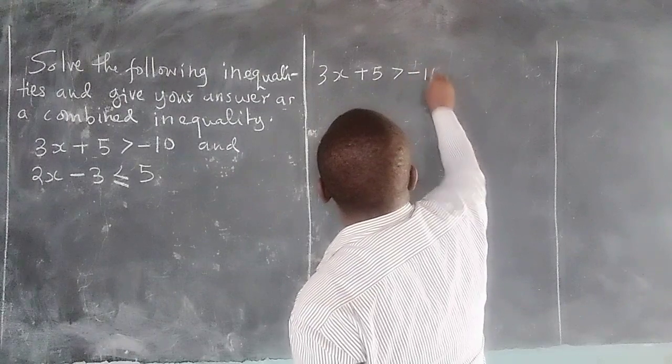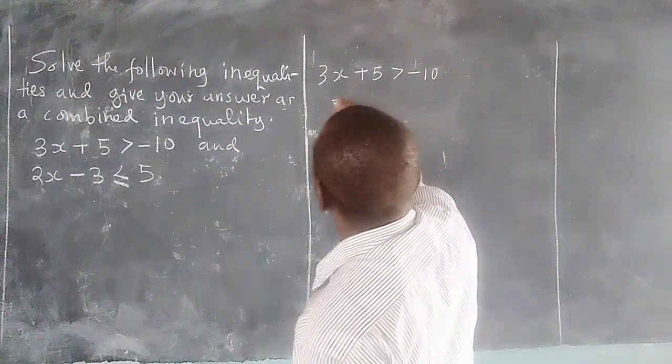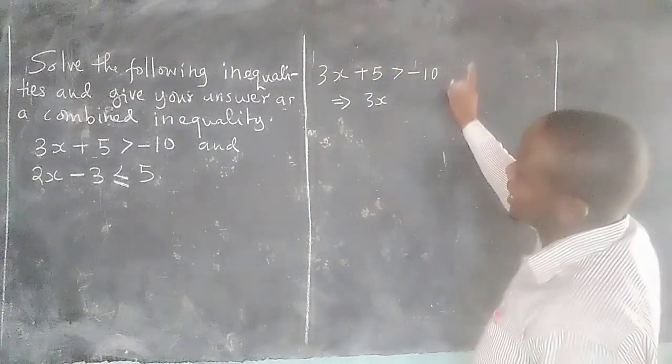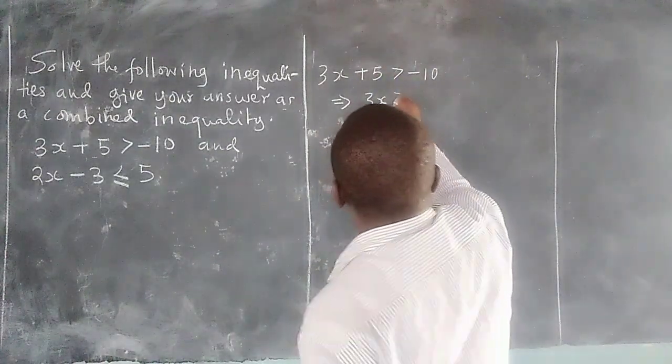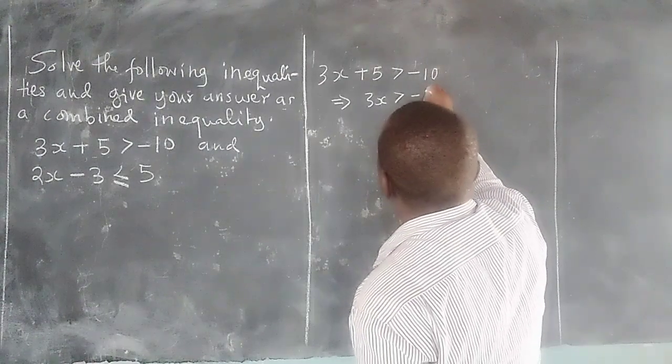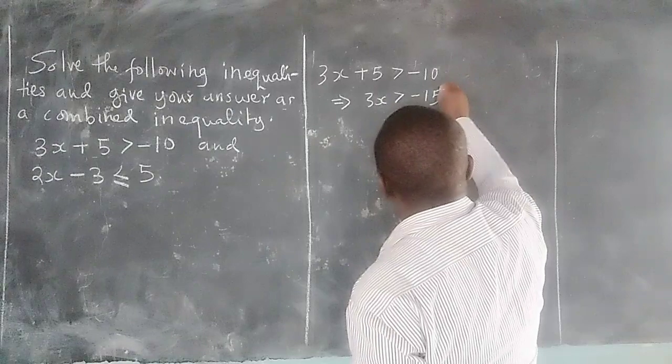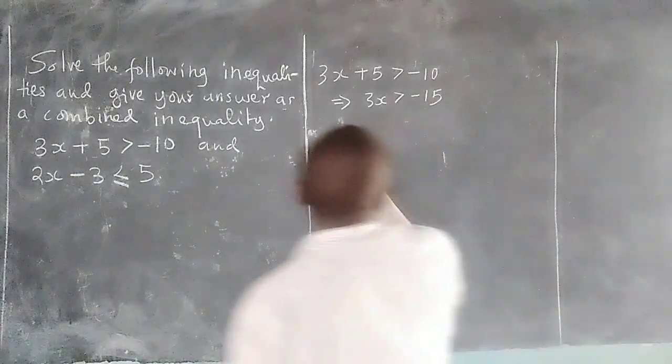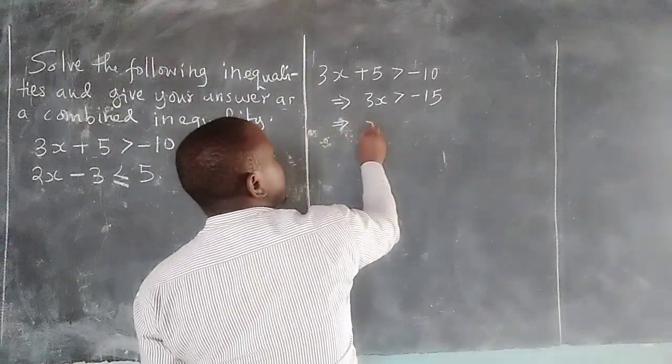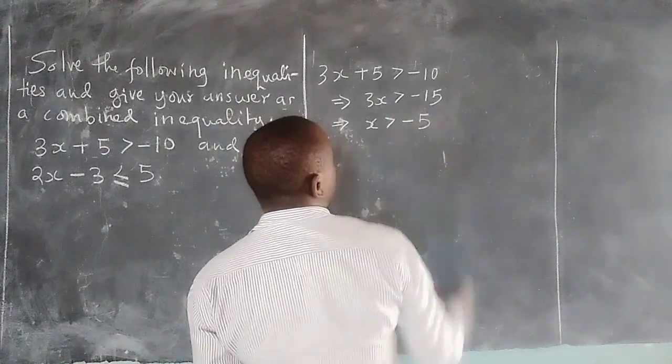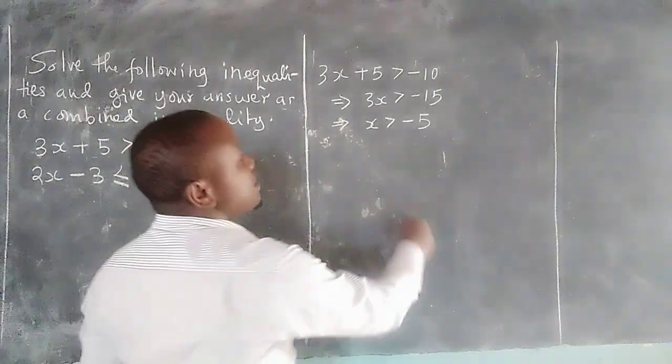Shall become 3x and we have -5 taken to the other side such that this will be greater than -10 minus 5, which becomes -15. This can be resolved to x is greater than -5 when we divide all by 3. So that is the first single statement.